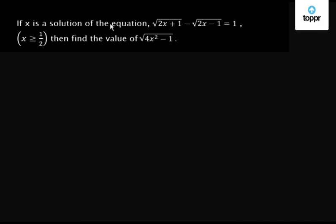If x is a solution of the equation root over 2x plus 1 minus root over 2x minus 1 equals to 1, where x is greater than or equal to 1 by 2, then find the value of root over 4x squared minus 1.